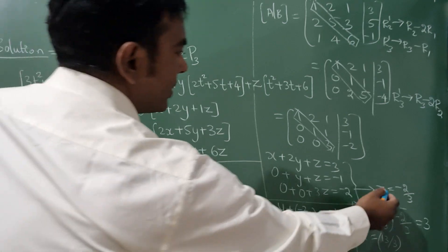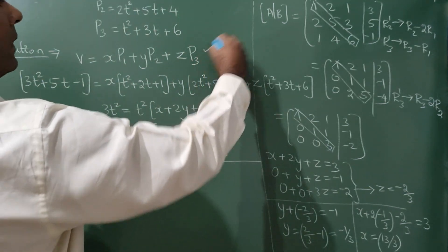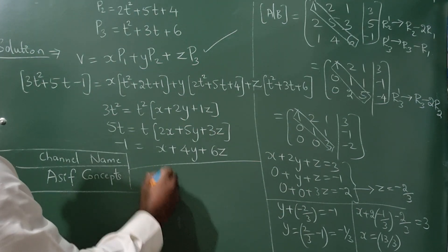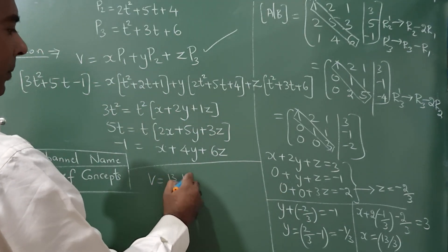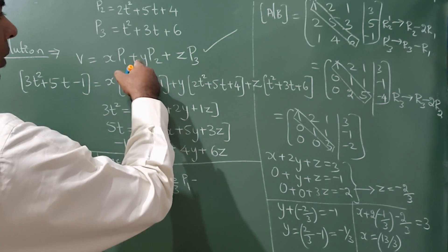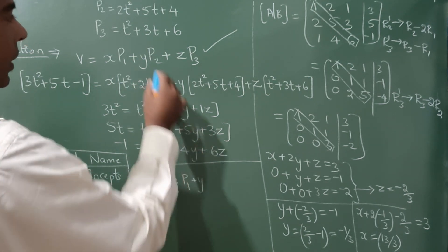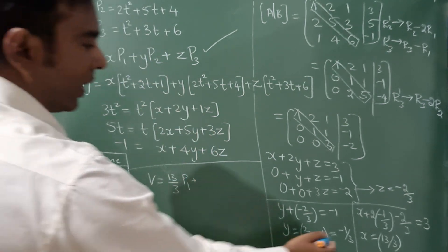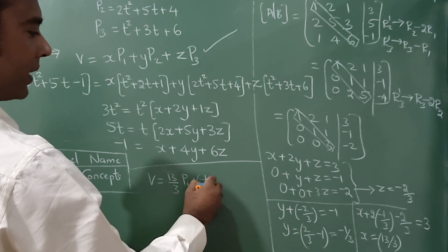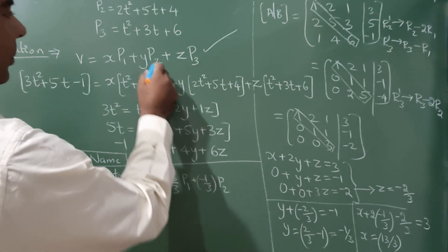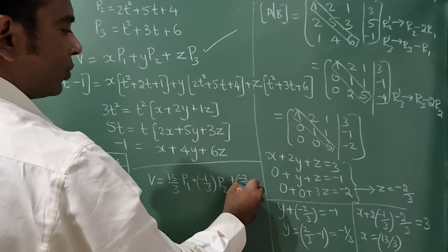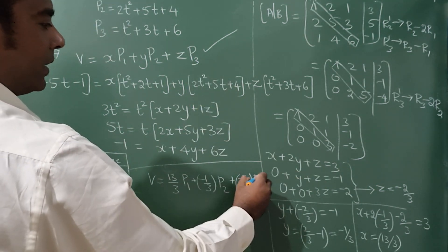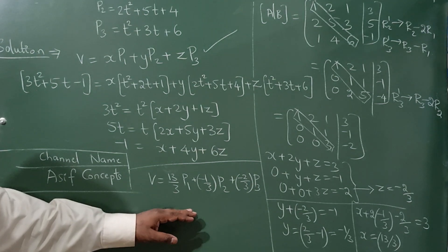Now x value, y value, z value substitute in this. So v equals what is x value? 13/3 p1 plus y value is -1/3 p2 plus z value is -2/3 p3. So this completes your answer.